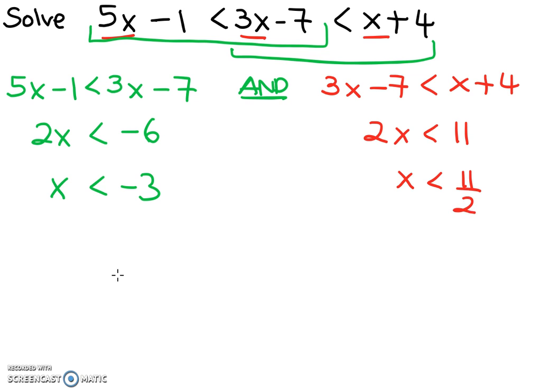Okay, so now draw our number line, because we have to combine those 2 answers. So negative 3 on the left-hand side, 11 over 2 on the right-hand side,